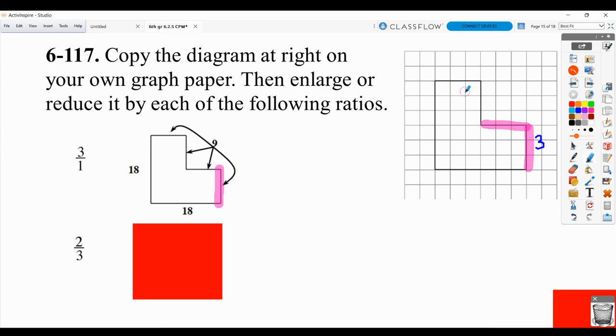Same thing here, here, and here. They were all 3. So they are all now have a length of 9. And then these were originally lengths of 6. And so 6 multiplied by ratio 3 to 1 would mean that the new lengths would be 18.